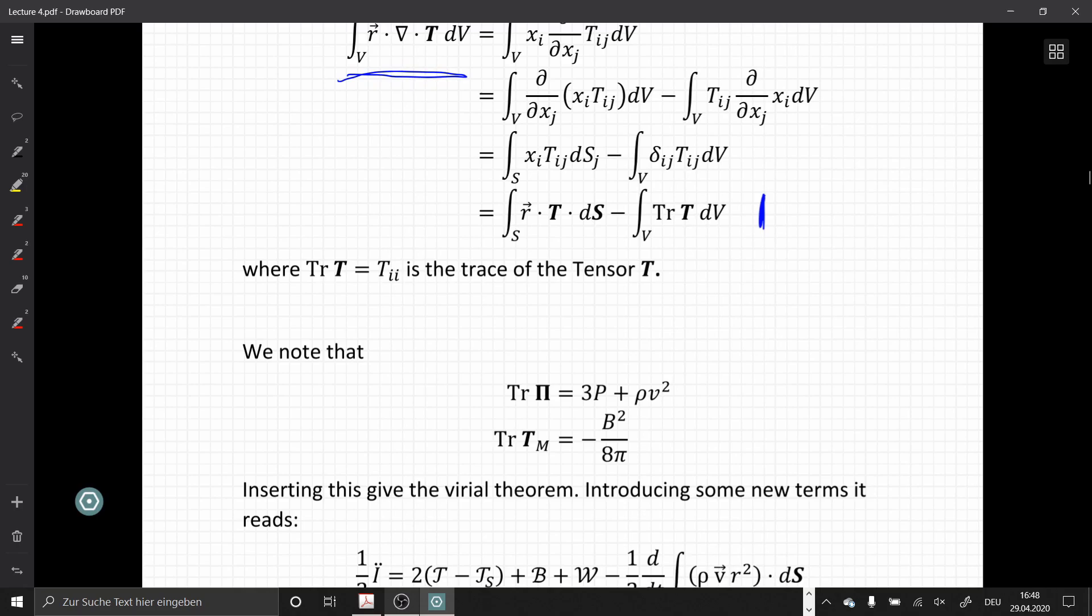And for the pi vector, for the pi tensor, the trace is simply three times the pressure plus rho times velocity squared. And the trace of Tm is given by the magnetic field strength squared divided by eight pi negative.